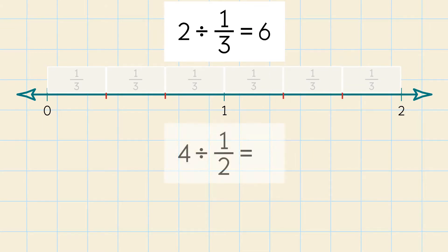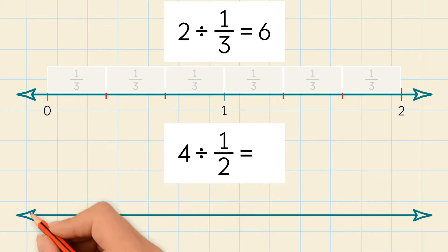Let's do another example. 4 divided by 1 half. Draw a number line from 0 to 4. Divide the number line into halves.